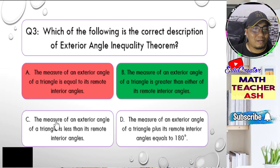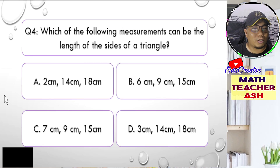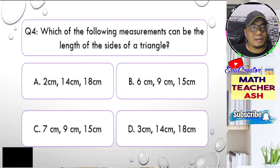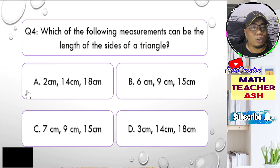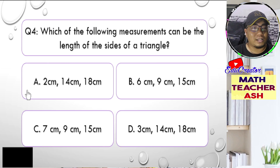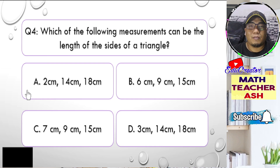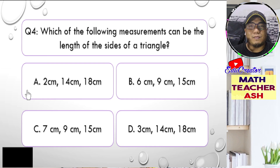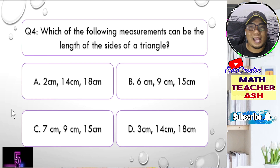Now let us go to question number four. Which of the following measurements can be the lengths of the sides of a triangle? Is it A, 2, 14, 18; B, 6, 9, and 15 centimeters; C, 7, 9, 15 centimeters; or letter D, 3, 14, 18 centimeters? I'll give you five seconds to think about your answer.